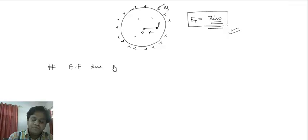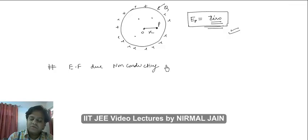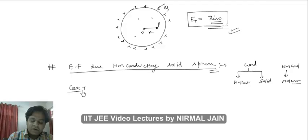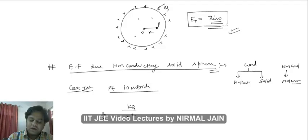Now we deal with the electric field due to a non-conducting solid sphere. In the above cases, for conducting spheres — whether hollow or solid — and for non-conducting hollow spheres, we had those three cases. Now for a non-conducting solid sphere: if the point is outside, the electric field will be kq by x squared, same as before.